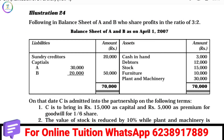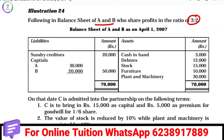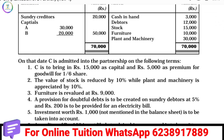If you have the balance sheet, this is A and B's balance sheet. At a ratio of 3 to 2, we have some liabilities on the balance sheet. This is an adjustment. C brings in 15,000 capital, 5,000 premium, C's share is 1 by 6. Stock value reduced by 10%, plant and machinery appreciated in value by 10%.